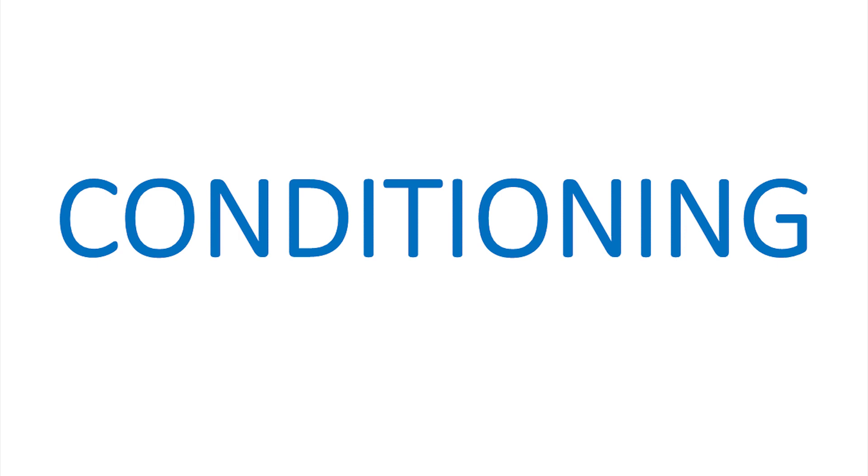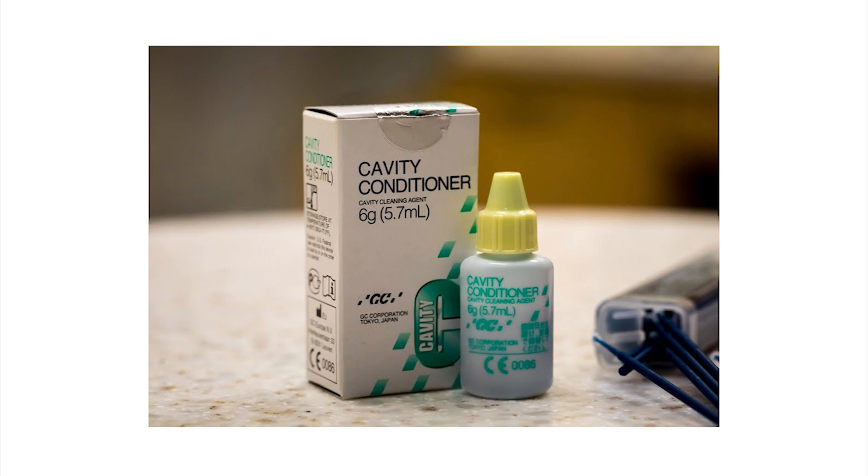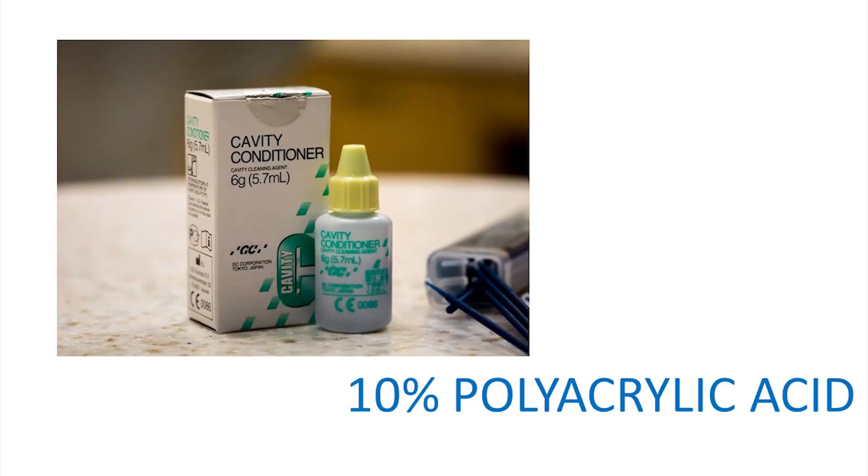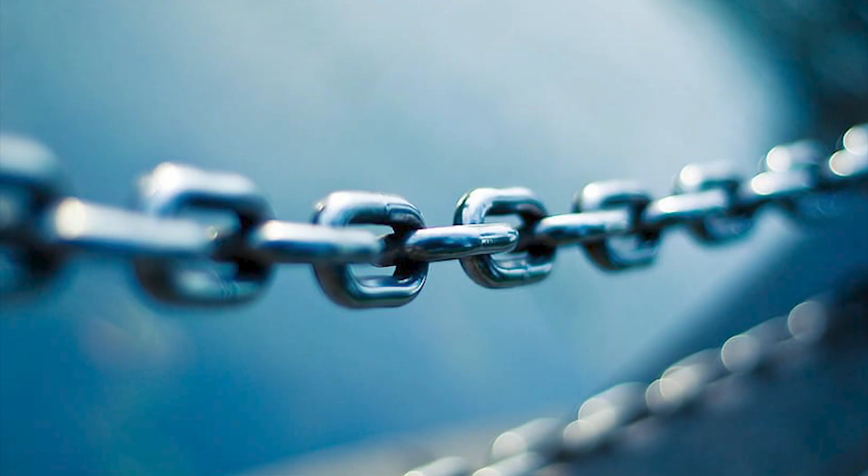In order to improve it, you can always do something called conditioning, where you apply 10 percent of polyacrylic acid for 10 to 15 seconds. That removes the smear layer, giving direct exposure of the tooth surface so that you can have better bond strength with the zinc polycarboxylate cement.